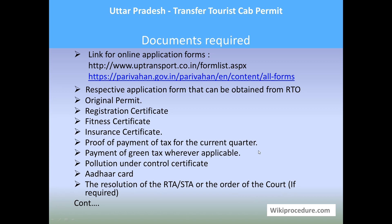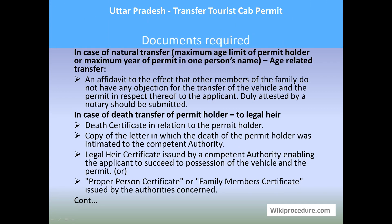In addition, there are cases where extra documents must be provided. For natural transfer due to age-related reasons: an affidavit stating that other family members are accepting the transfer to the applicant — for both the vehicle and the permit — duly attested by a notary. In case of death transfer: the applicant must provide the death certificate of the permit holder.